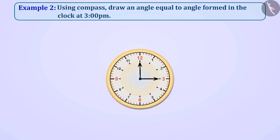When the clock strikes 3, then the big needle on the clock is at 12 and the small needle is at 3. In this way, the two needles form a right angle. The right angle, that is 90 degrees angle.